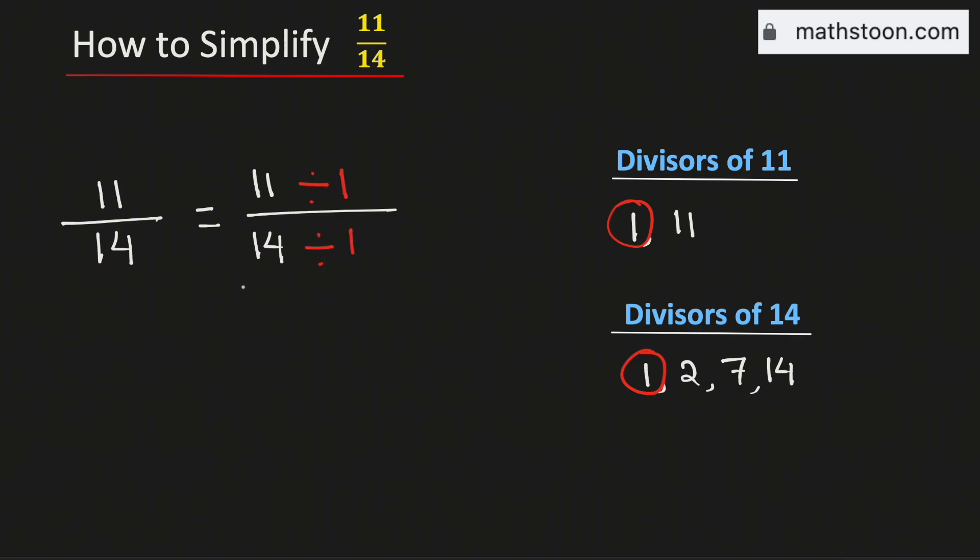By doing so, we will get 11 over 14. So the fraction 11 over 14 simplified is equal to 11 over 14. It means this fraction is already simplified.